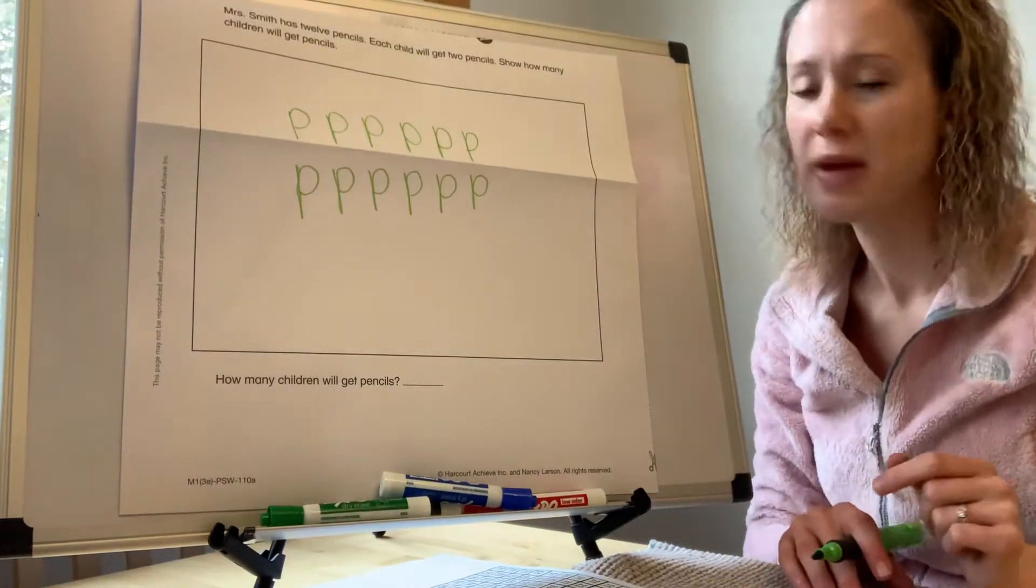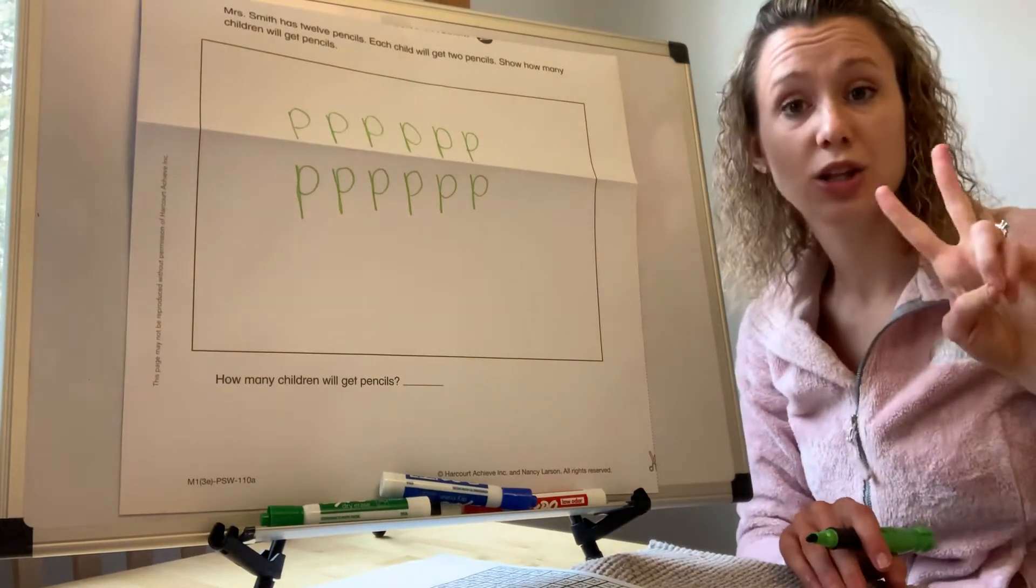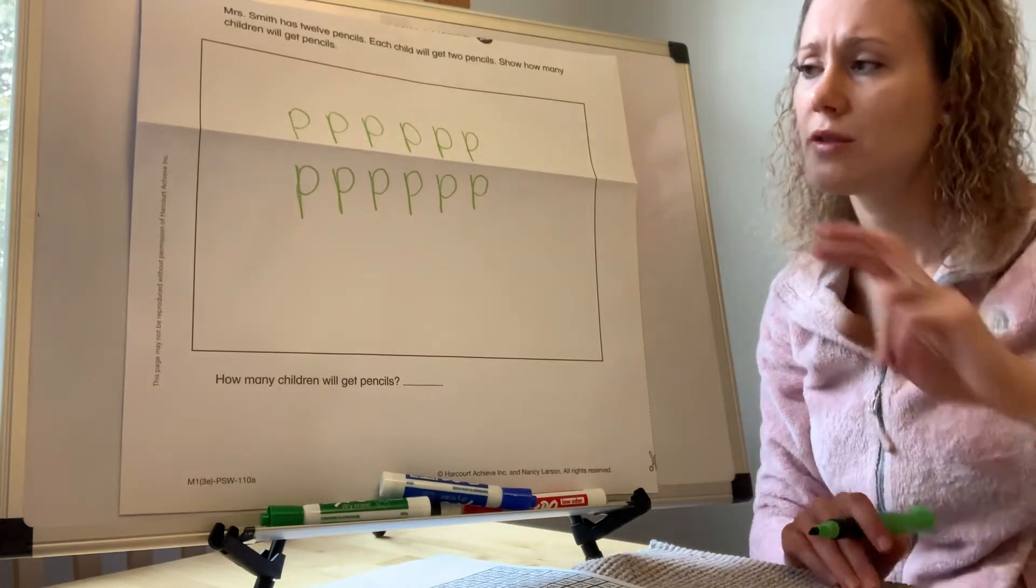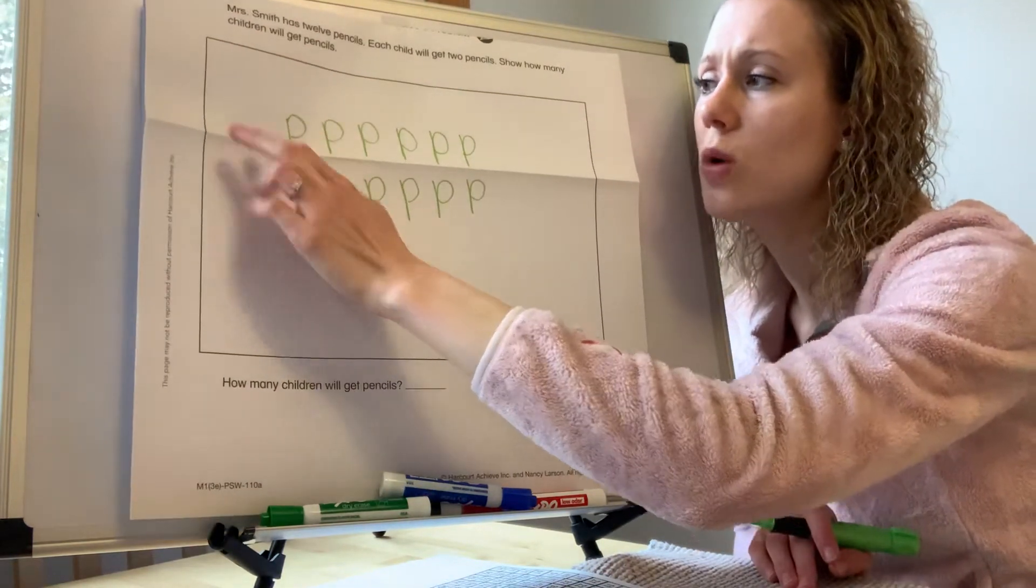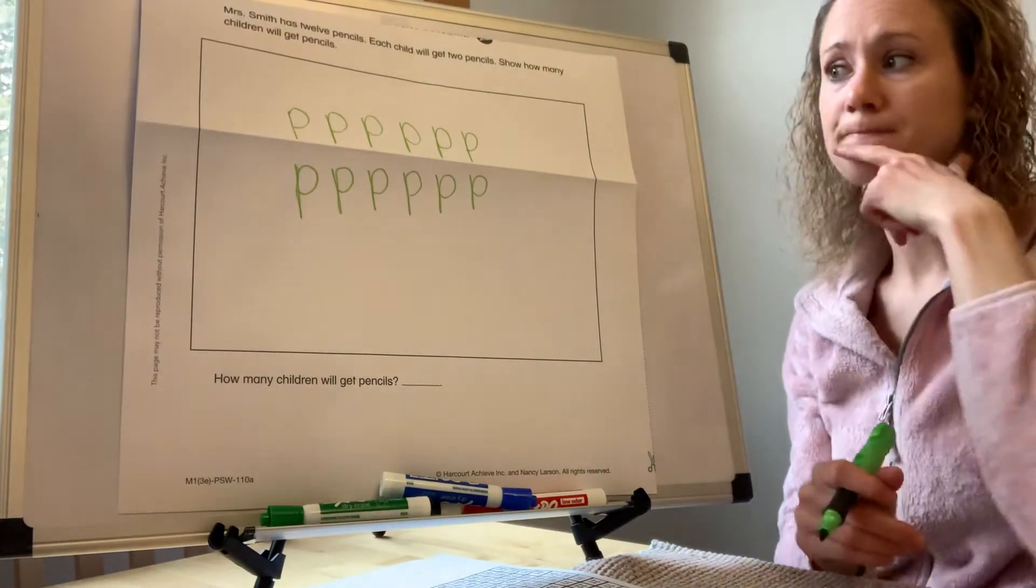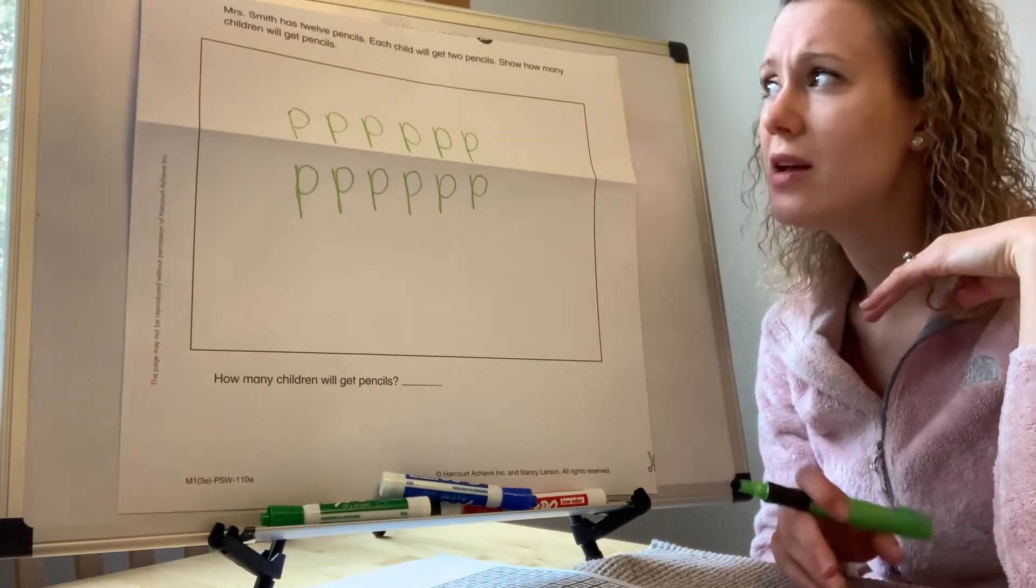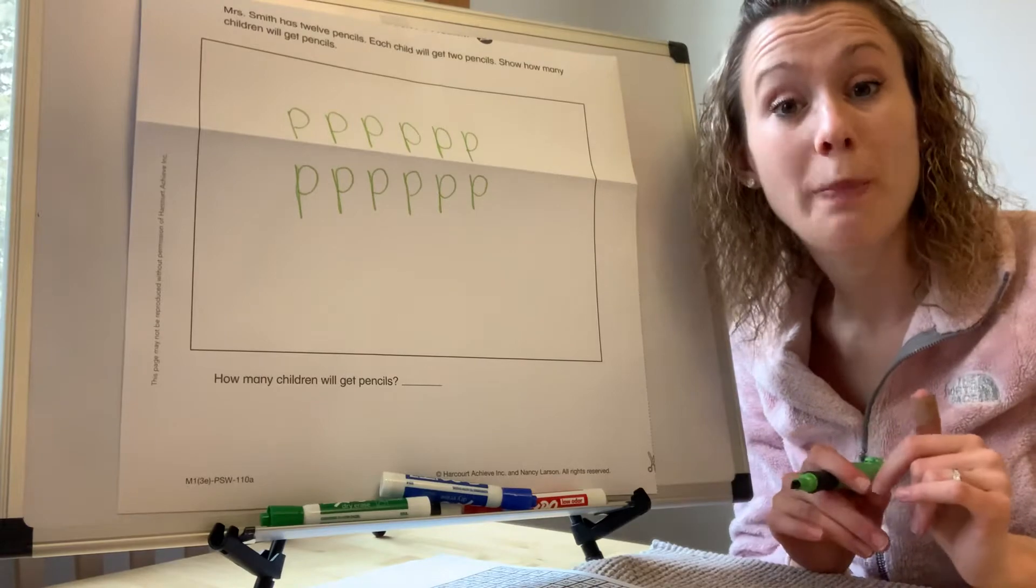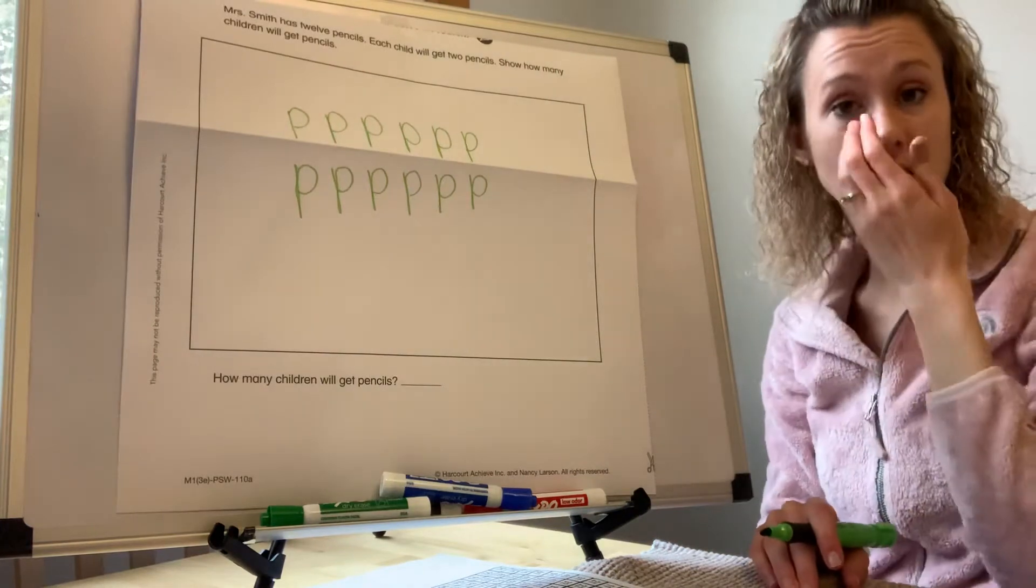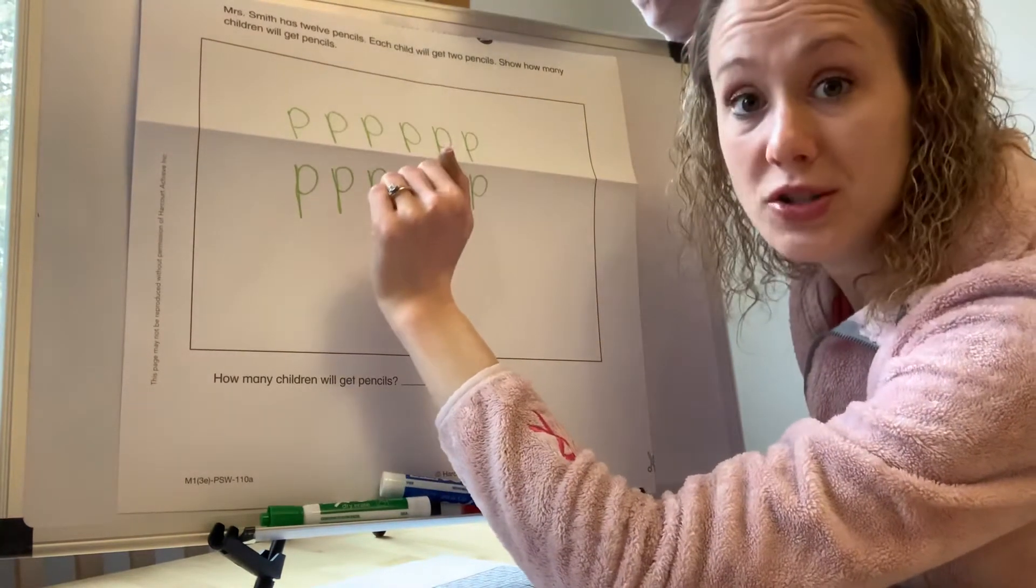All right. It says Mrs. Smith has 12 pencils. We did that. So we say check. And then it says each child will get 2. Okay. So if each child gets 2 pencils, what should we do to show that 2 pencils will go with 1 child? How are we showing that? Well, my dears, it's just like when we show pairs. So what we're going to do is every time we see 2 pencils, we're going to put a circle around that because 1 child will get those 2 in that circle. So every time we see 2, we're going to put a circle around it.